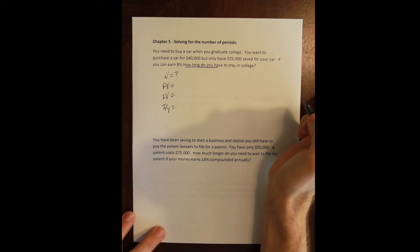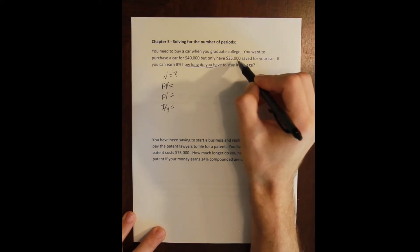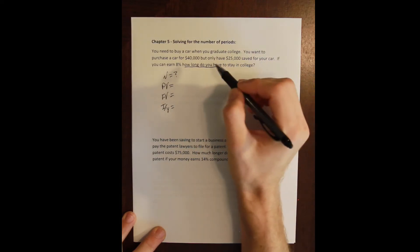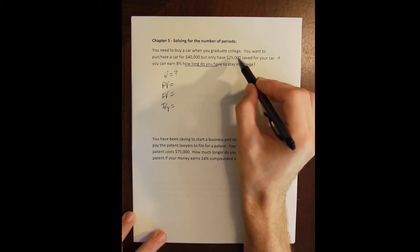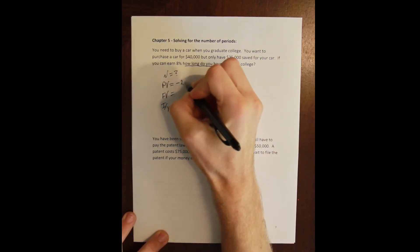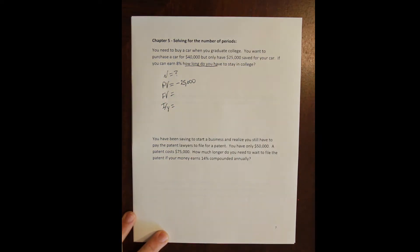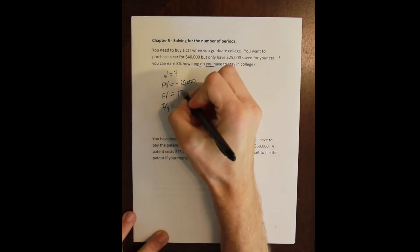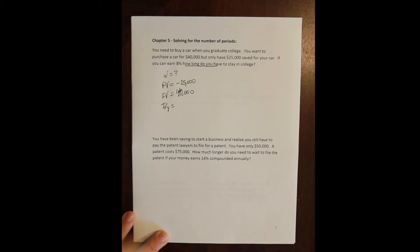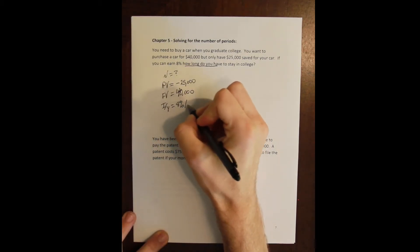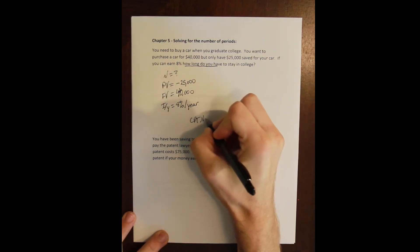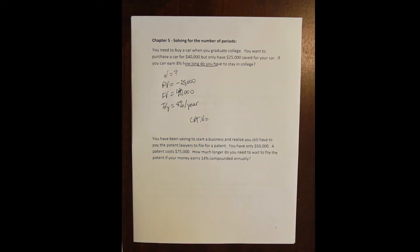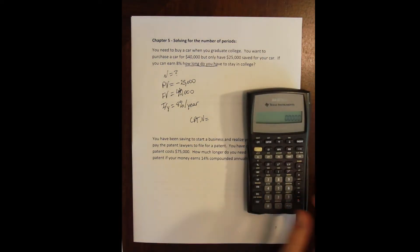We need in an equation we can only have one unknown. So the present value is how much do I need to invest? I have $25,000 saved up. I've got to invest it in something that's going to earn 8% and turn it into 40. If I don't do anything with this money nothing happens to it. So I'm going to invest it. That means it's a cash outflow of $25,000 in my savings account. The future value that I'm hoping for is $40,000. That's what I need to buy my car. And my I/Y here is 8% per year.